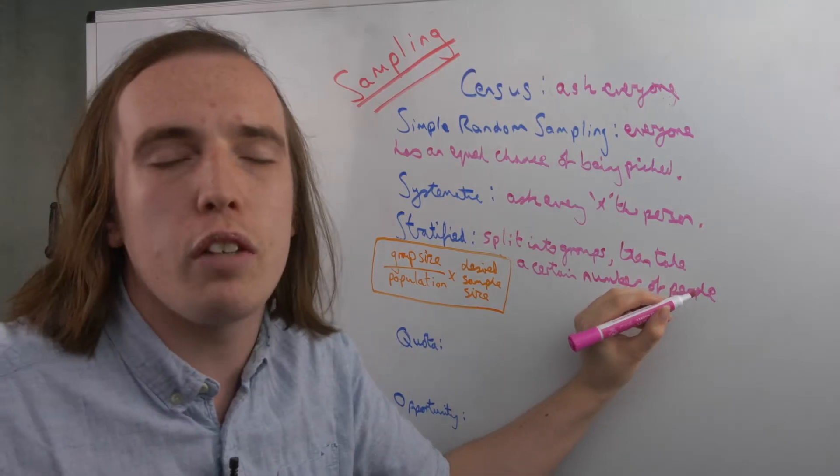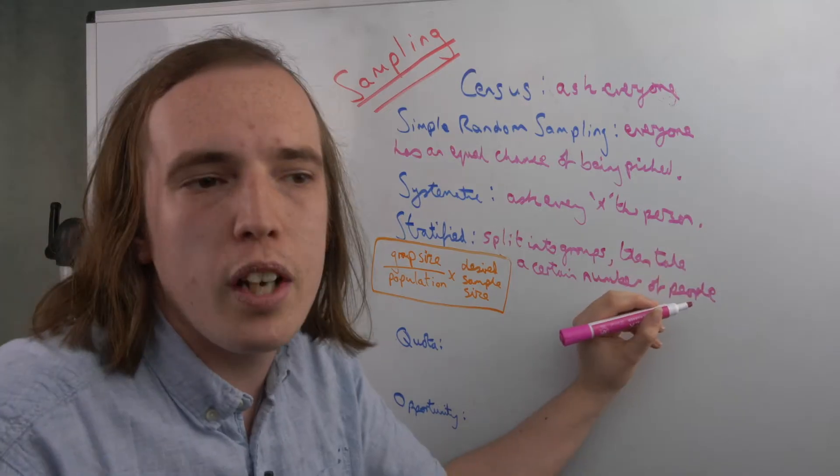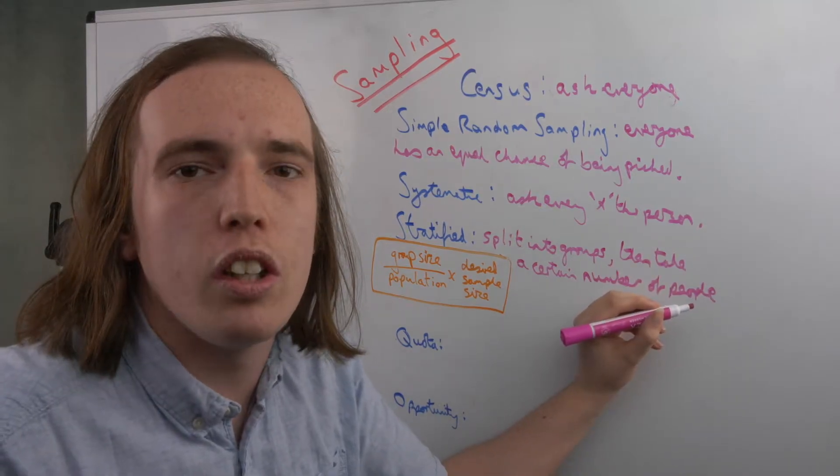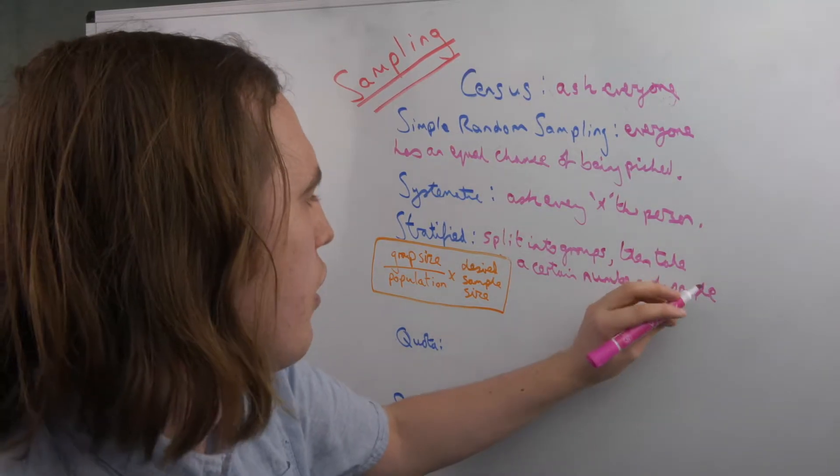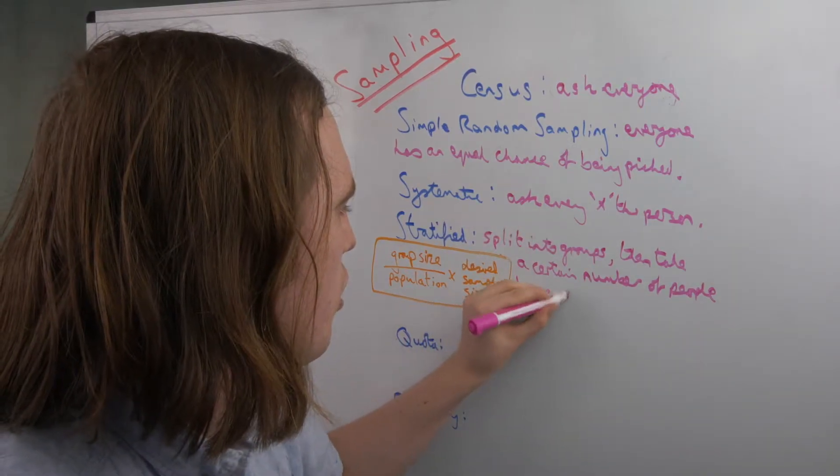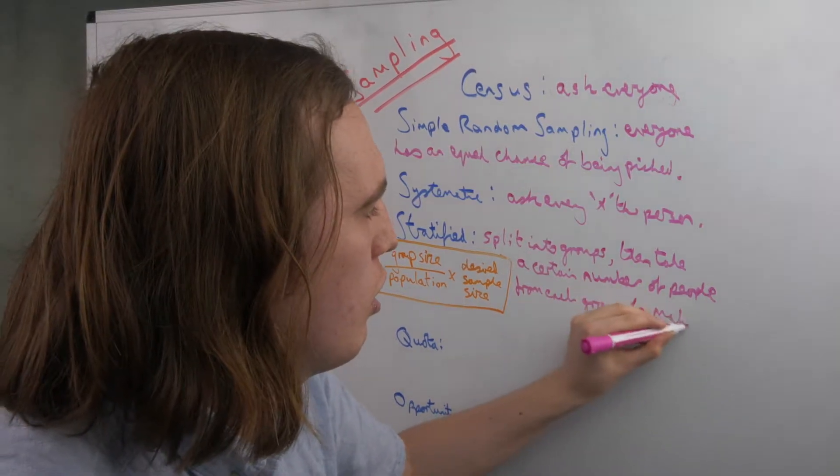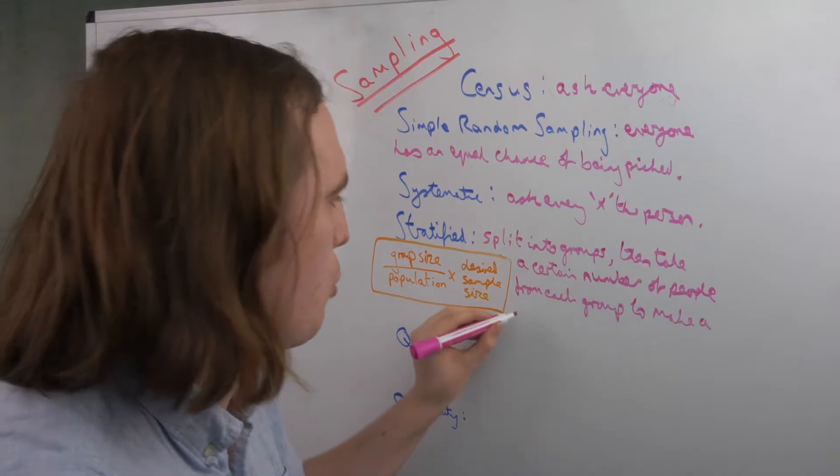So say you're actively looking for a sample size of 30, you'll go how many people are in this age group, how many people in the population total, and then times that by the 30. So take a certain number of people from each group to make a sample size that reflects those proportions.